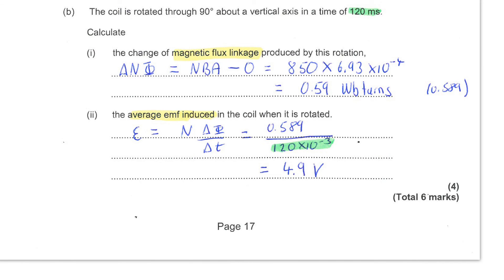Finally, you're asked to calculate the average EMF induced in the coil when it is rotated. So here you're going to apply Faraday's law that the magnitude of the induced EMF equals the rate of change of flux linkage. Quite simply, the flux linkage divided by the time taken. And that gives you a value of 4.9 volts.